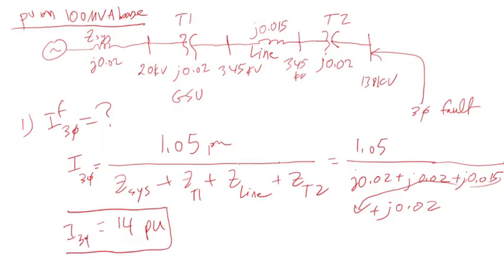Now let's assume the choices you are given during the exam are in amps, so you need the base current. I_base equals MVA—in this case 100 MVA—divided by square root of 3 times the voltage.